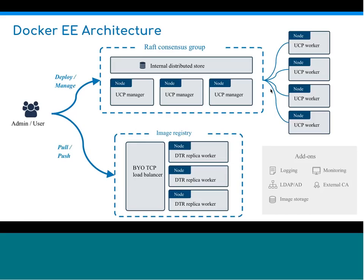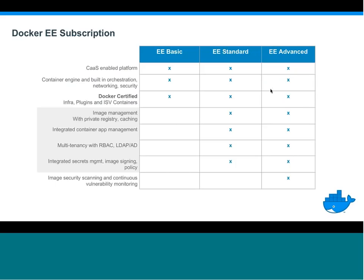Additional tooling can be added based on certified partners around logging, monitoring, and storage. Docker EE also comes in Basic and Standard tiers. Standard and Advanced include the private registry and Universal Control Plane with GUI-based management. EE Basic provides certified infrastructure and certified plug-ins but not the UCP management GUI. With Advanced, you also get the security scanning capability.